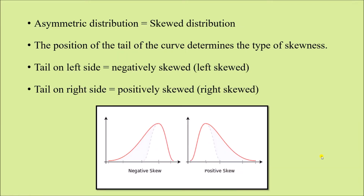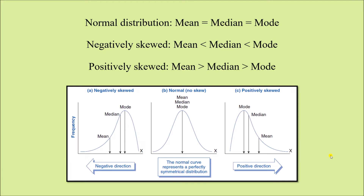We know that in the normal curve, the mean, median, and mode are all represented by the vertical line at the center — they all coincide. In any skewed distribution, always remember the mean value is closest to the tail. So on the side where the tail is, that is where the mean value will be positioned.